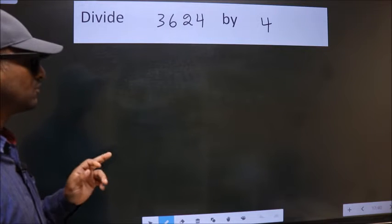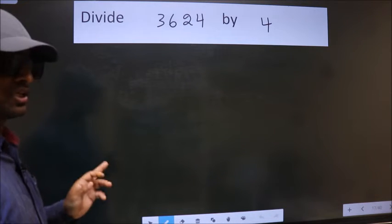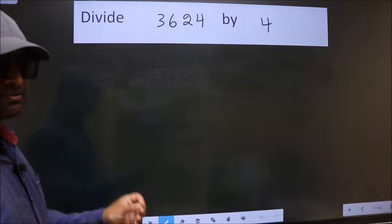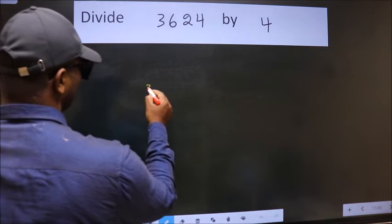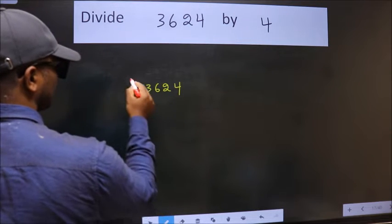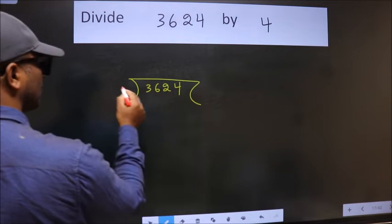Divide 3624 by 4. To do this division, we should frame it in this way. 3624 here, 4 here.